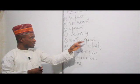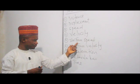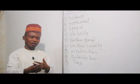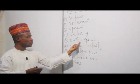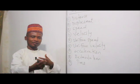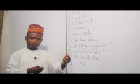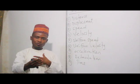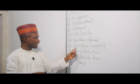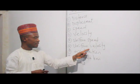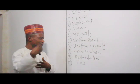Uniform speed: since we define speed as the rate of change of distance with time, if a body travels equal distance in equal time, no matter how small the time may be, then the speed is said to be uniform or constant speed. Uniform velocity: if a body moves equal displacement in equal time, no matter how small the time may be, then the velocity is said to be uniform or constant velocity.